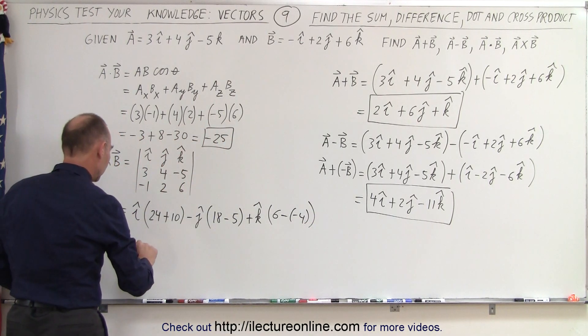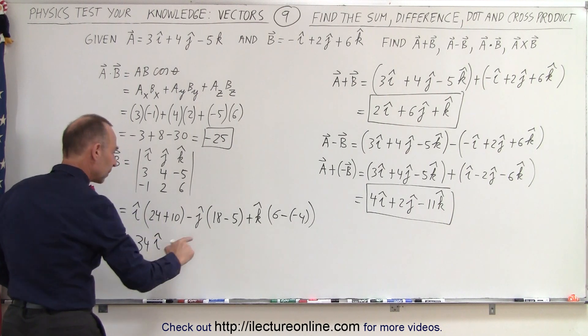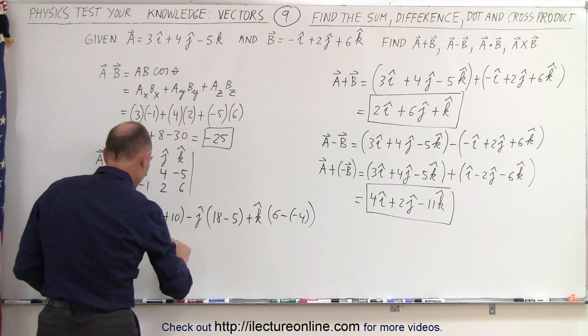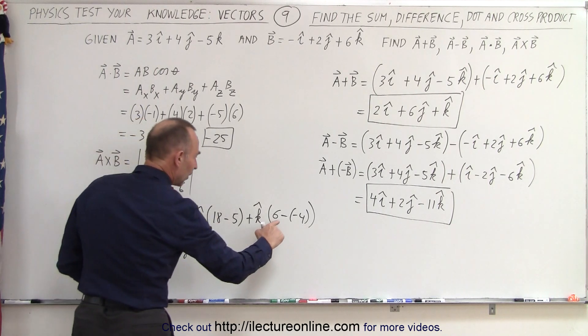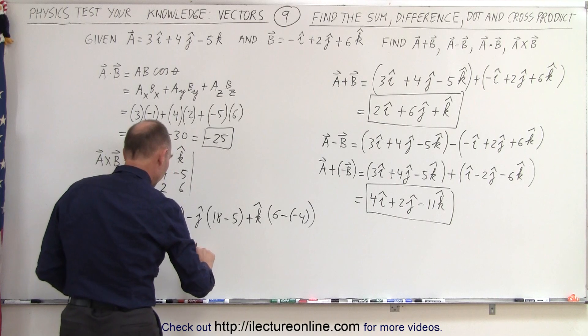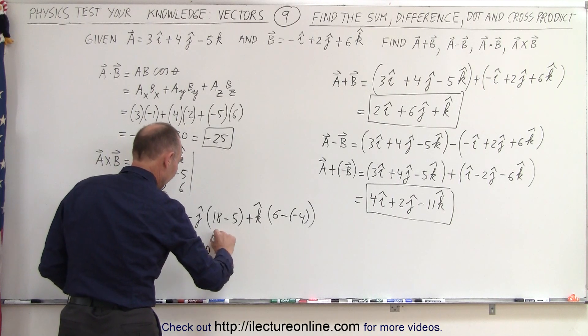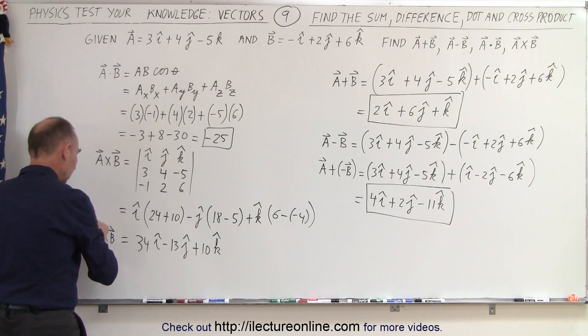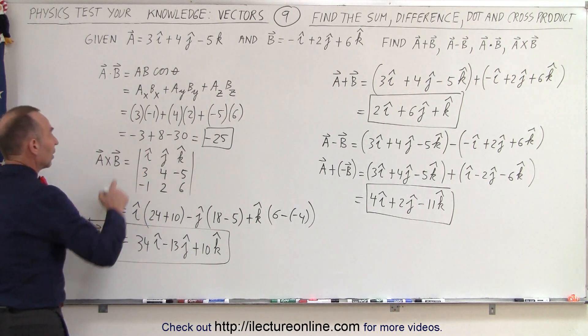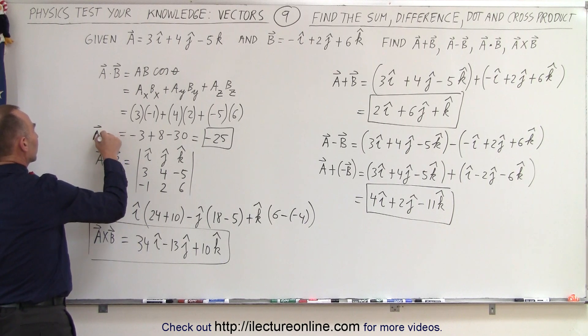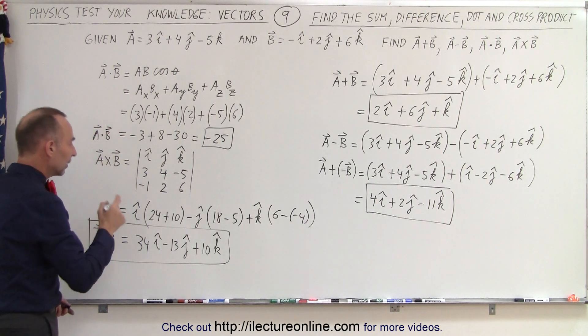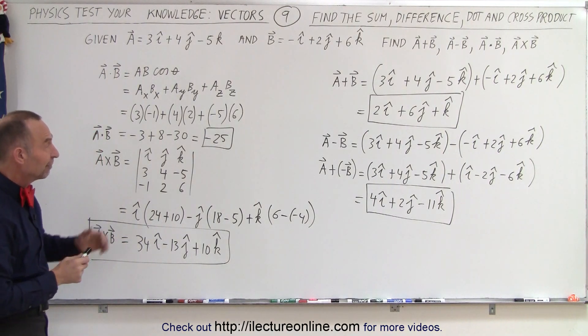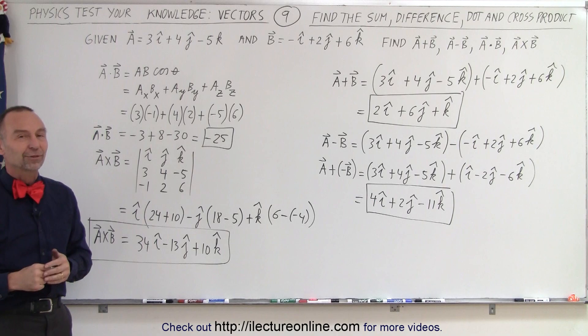And finally, this is equal to 34i. That would be a positive 13, but a negative. That would be minus 13j. And we have a 6 plus 4, which would be plus 10k. And that would be a cross b, the cross product of the two vectors. There's the dot product of the two vectors. And that is how we add, subtract, and multiply via dot product or cross product the two vectors.